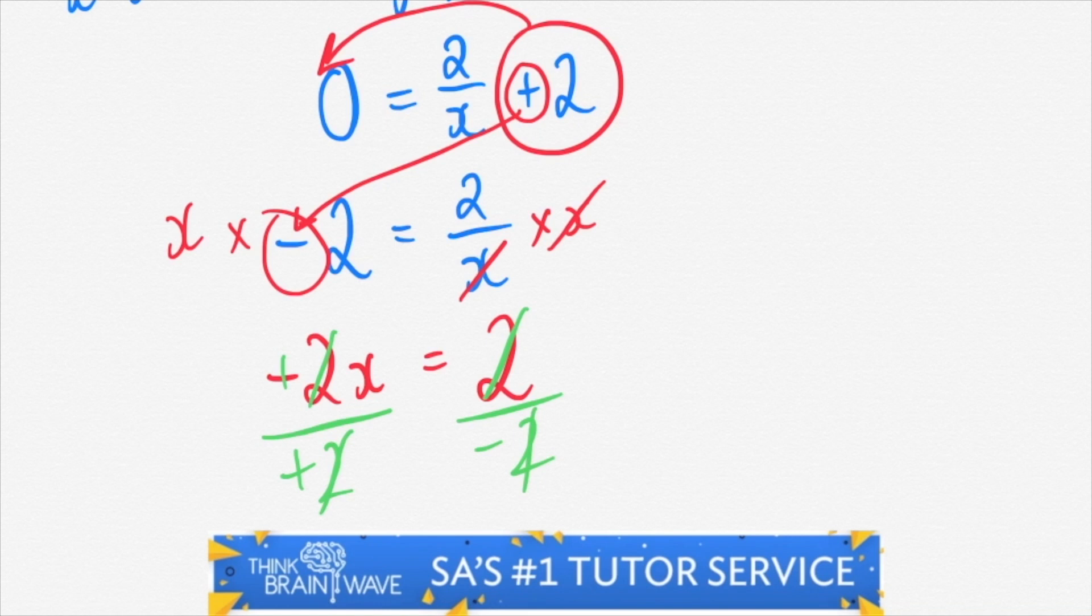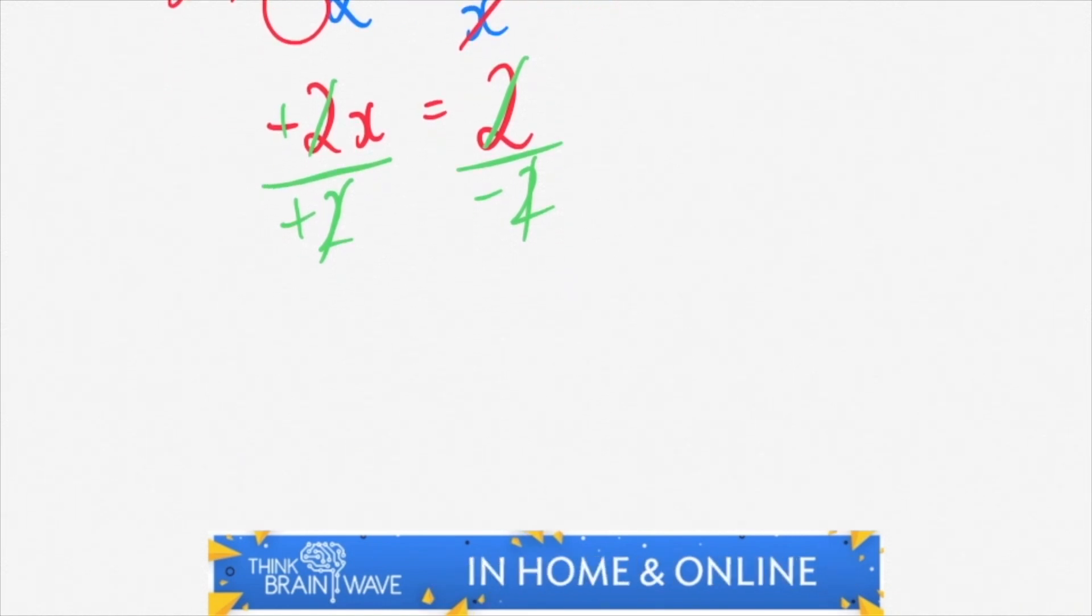The 2's cancel, the negatives change signs, and you're left with x is equal to minus 1.